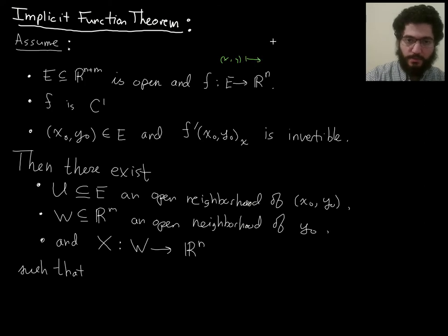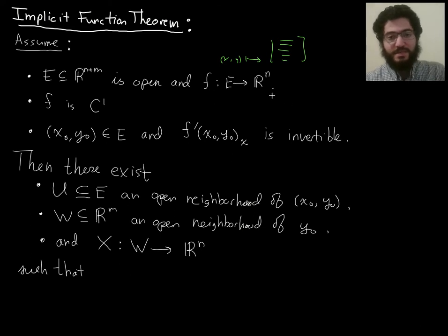So an xy pair goes to a list of n numbers. And each of these mappings, xy goes to the first component, xy goes to the second component, and so on. Each of these is a component function of f. So these are standing in for equations. Later on, or soon, when we finish stating the implicit function theorem, we're going to view f as supplying the left-hand side of an equation that says f(x,y) = 0.